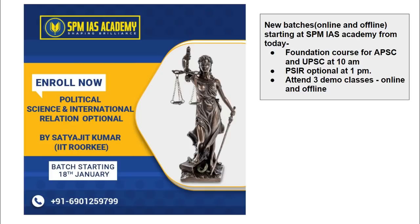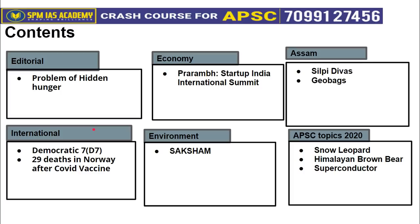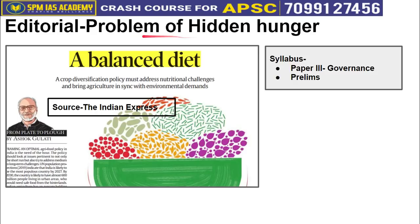This is the list of topics we will be covering from today's newspaper. The first article is taken from the editorial segment — it talks about the problem of hidden hunger in India. This topic is important from our syllabus Paper 3 governance point of view.